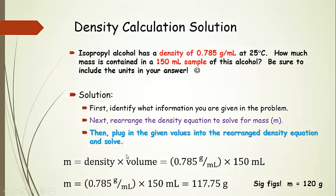Now on the next slide we're just going to plug that in. So we're going to plug in our values density times volume. So 0.785 grams per milliliter multiplied by 150 milliliters. And if we remember our dimensional analysis, the milliliters will go away. Then we're going to end up with 117.75 grams.